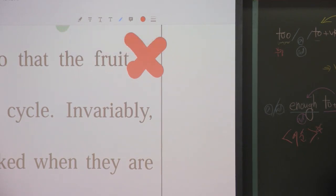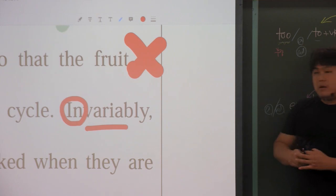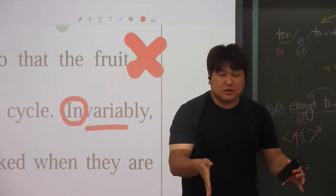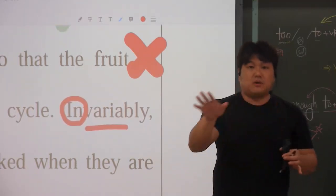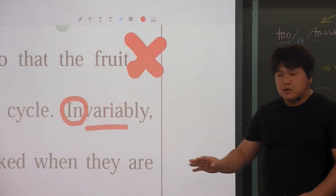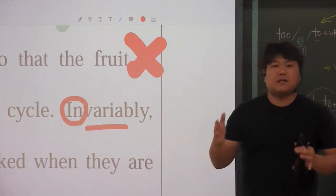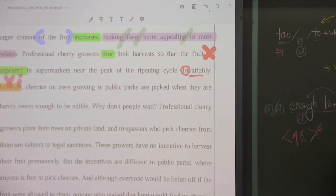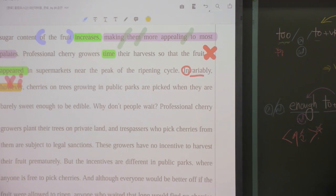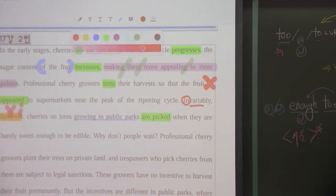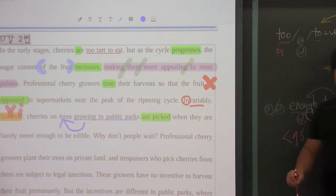'invariably'를 분석해 보면 'in'하고 'variable'이 나오죠. 'variable'은 다양한 거예요. 'variety' 하잖아. 근데 앞에 'in'이 붙었으니까 다양하지 않은 거죠. 그러면 획일적인 거고, 한결같은 거고, 다 똑같은 거지. 'ly'가 붙었으니까 부사로서 '대부분 비슷하게' 정도로 의역이 되겠습니다. 대부분 비슷하게 'cherries on trees growing in public parks', 동사는 누가 봐도 'are picked'니까요. 앞에 있는 'trees growing'부터 나와있는 거는 파란색으로 바꿔주고 수식을 하고 있다라고 체크를 해 두셔야 됩니다. 형용사의 위치이죠.